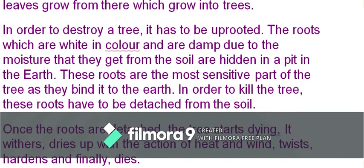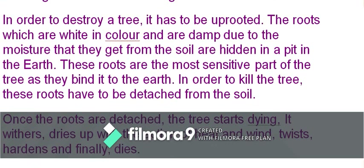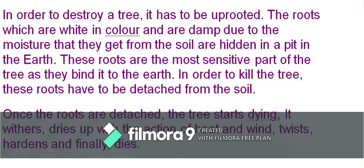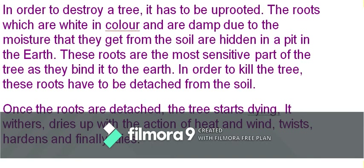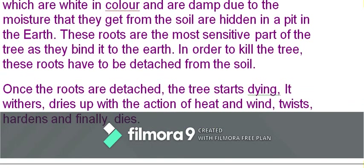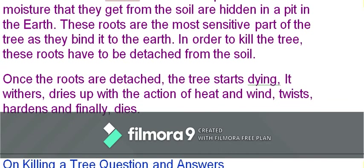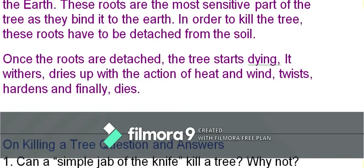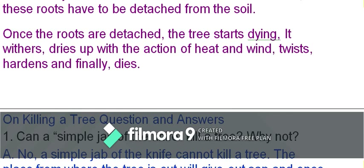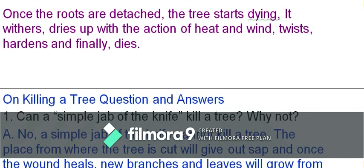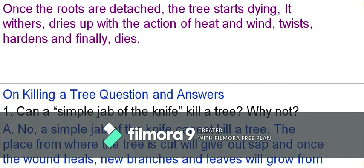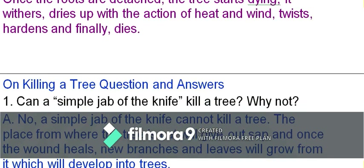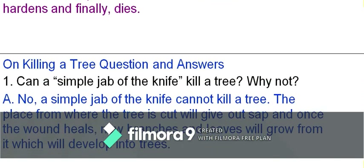To destroy a tree it must be uprooted. The roots — white in color and damp from soil moisture — are hidden in a pit in the earth and are the most sensitive part of the tree, binding it to the earth. Once the roots are detached from the soil, the tree starts dying: it withers, dries up under heat and wind, twists, hardens, and finally dies.